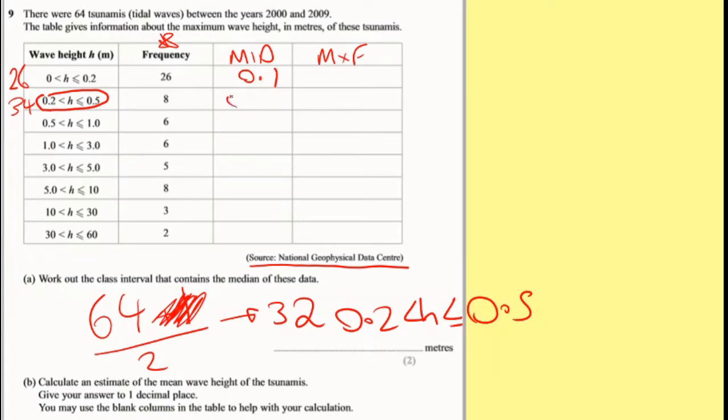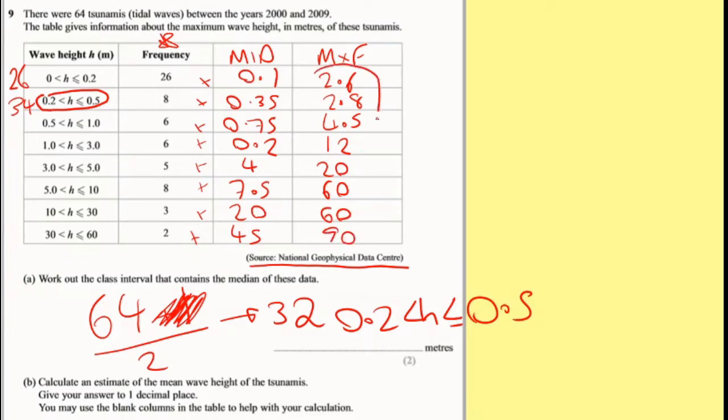So let's just do my midpoint right away. So this is 0.1, then it's 0.35, 0.75, 2.5. So this one here is 4.5, that one there is 7.5, this one here is 20, that one there is 45. So it's your midpoint times frequency, so I've got to times all these together. So 26 times 0.1 is 2.6, 0.35 times 8 is 2.8, 0.75 times 6 is 4.5. That's 12, that's 20, 60, 60 again, and then 90. Now I have to add all of these up because this is the same as adding up your scores.